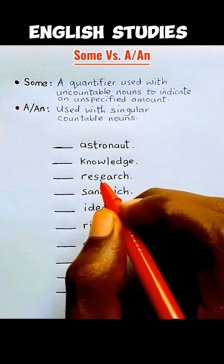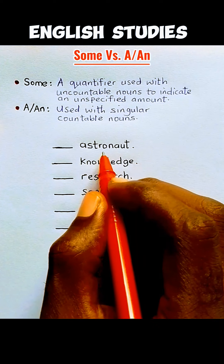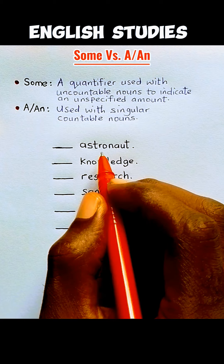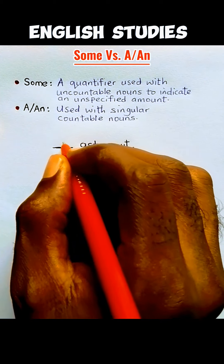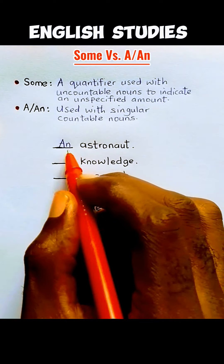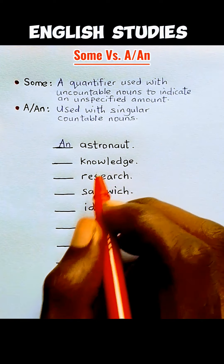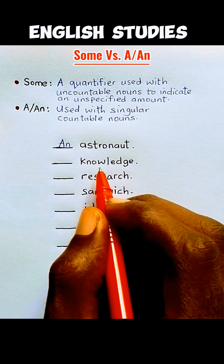'Astronaut' is a singular countable noun, so we are using either 'a' or 'an.' Since this word begins with a vowel sound, we use 'an' — an astronaut. 'Knowledge' is an uncountable noun, so we use the quantifier 'some' — some knowledge.